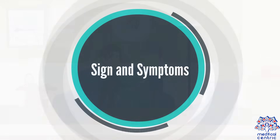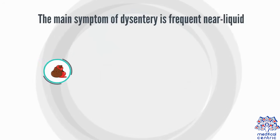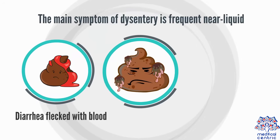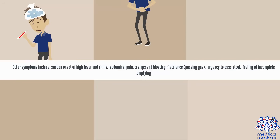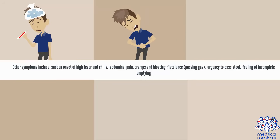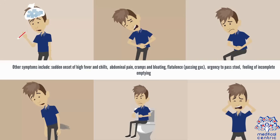Signs and Symptoms: The main symptom of dysentery is frequent near-liquid diarrhea flecked with blood, mucus, or pus. Other symptoms include sudden onset of high fever and chills, abdominal pain, cramps and bloating, flatulence (passing gas), and urgency to pass stool.